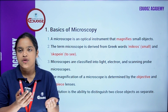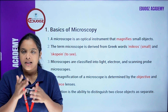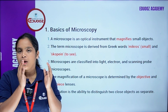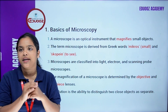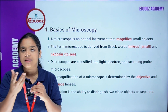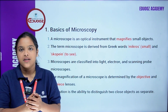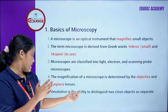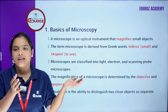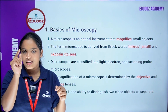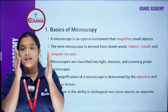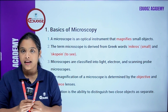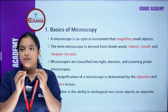Microscopes are classified into light, electron, and scanning probe microscopes. The magnification of the microscope is determined by objective and eyepiece lens. Resolution is the ability to distinguish two close objects as separate.